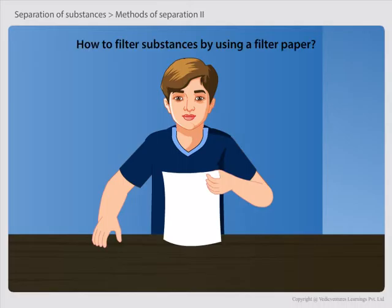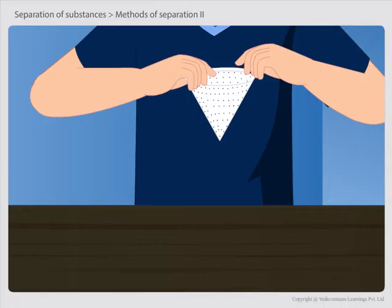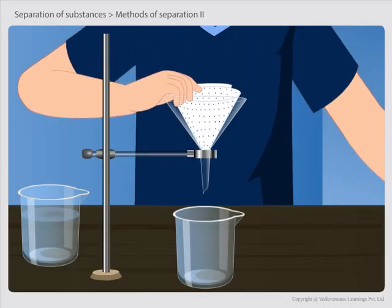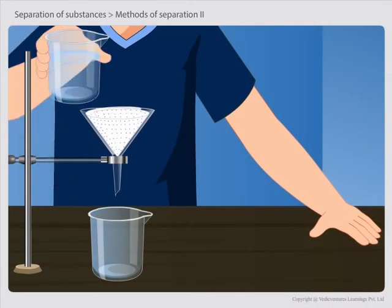We have learned that clothes act as a filter. Apart from clothes, a filter paper is another type of filter that has very fine pores in it. Let us learn how to filter substances by using a filter paper.